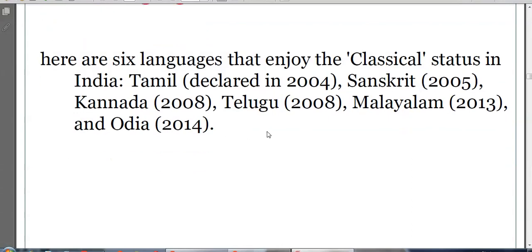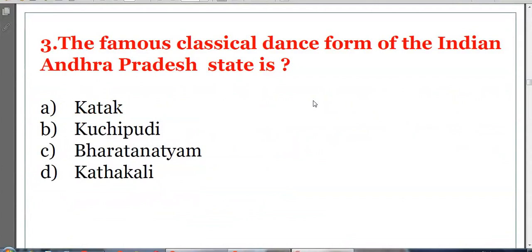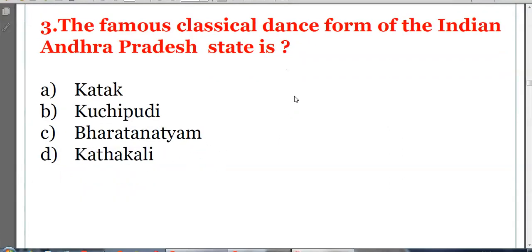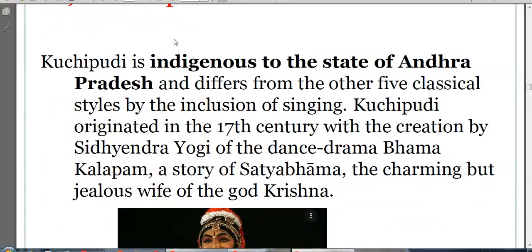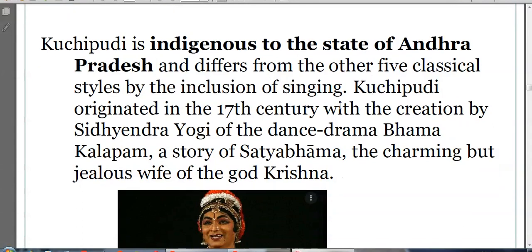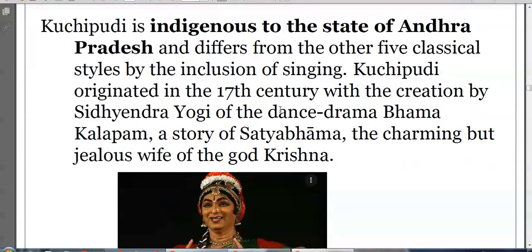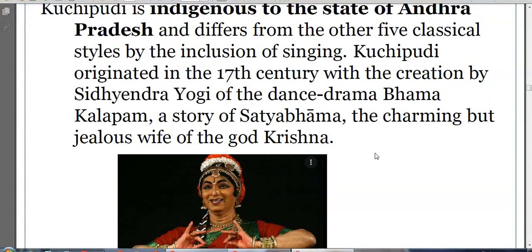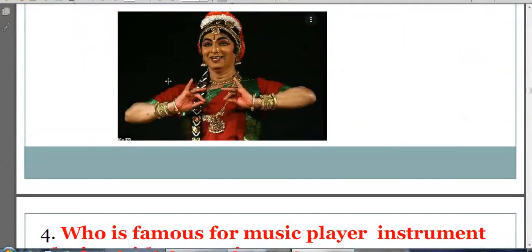Odia is the latest language declared in 2014. Next question: The famous classical dance form of Andhra Pradesh is Kathak, Kuchipudi, Bharatanatyam, or Kathakali? The answer is B, Kuchipudi. Kuchipudi is indigenous to Andhra Pradesh and differs from other styles by inclusion of singing while dancing. It originated in the 17th century, created by Siddhendra Yogi in the dance drama Bama Kalapam, a story of Satyabhama, the jealous wife of Lord Krishna.